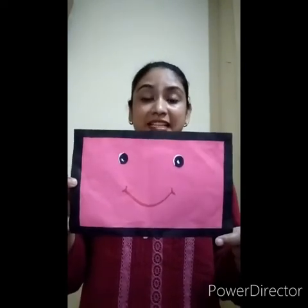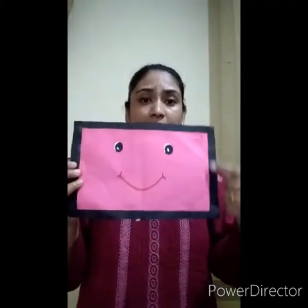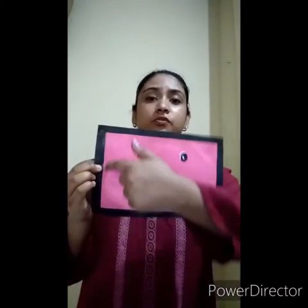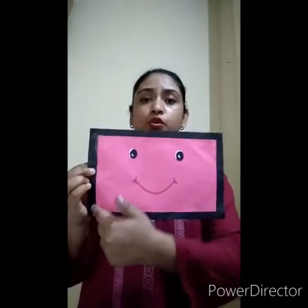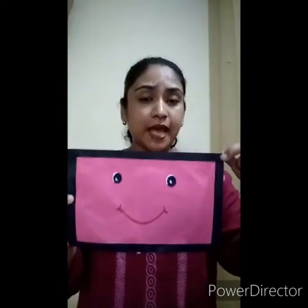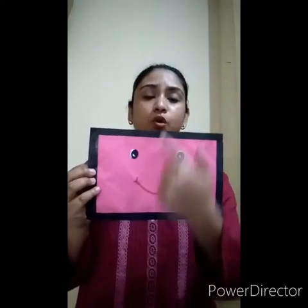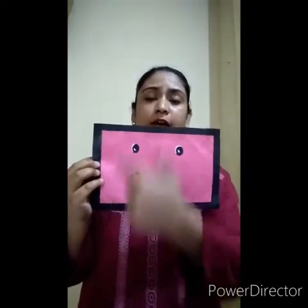Now I am going to introduce to you a new shape, and that shape is called a rectangle. This is a rectangle. A rectangle has how many sides? Let us count: one, two, three, and four — rectangle has four sides. Two opposite sides are equal.